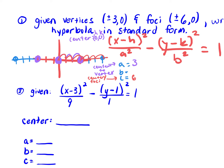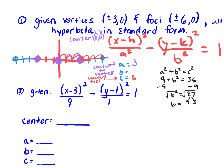What's the formula we can use once we have two values to find the third? We use a squared plus b squared equals c squared. Our a squared is 9, b squared is what we're trying to find, and c squared is 6 squared which is 36. Subtract 9 on both sides, so b squared is 27. Taking the square root, b equals the square root of 27. Simplified: 9 and 3 are factors of 27, so b equals 3 square root 3.